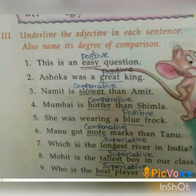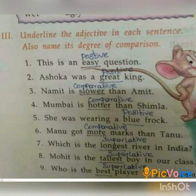Fourth one: Mumbai is hotter than Simla. Hotter — comparative. Fifth one: She was wearing a blue frock. Blue — positive. Sixth one: Manu got more marks than Danu. More — comparative.